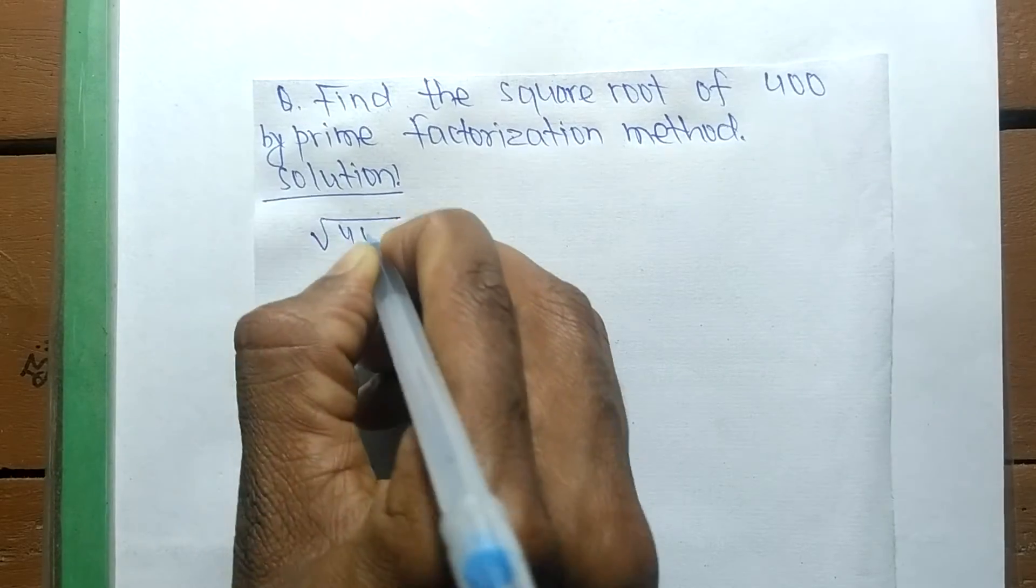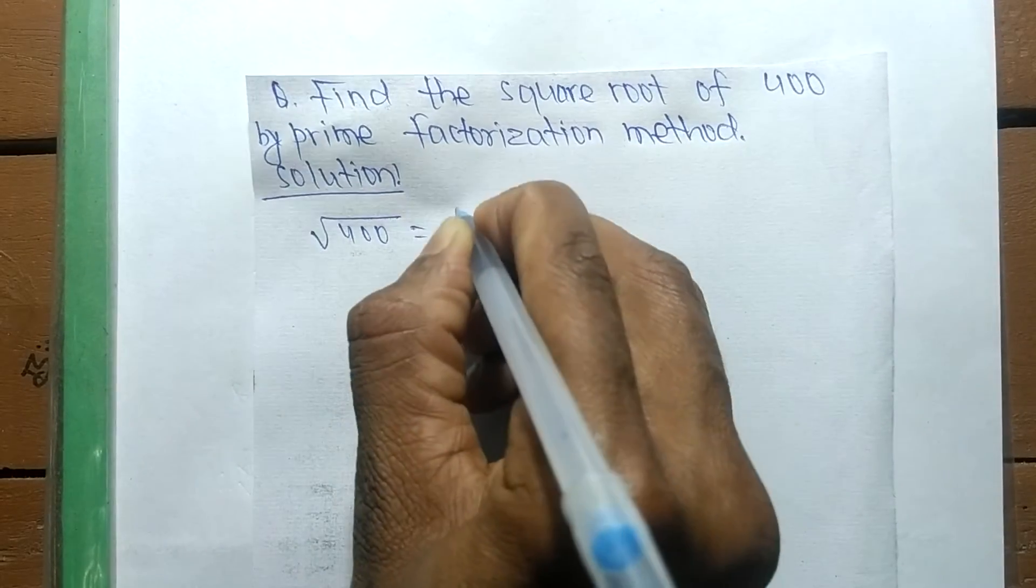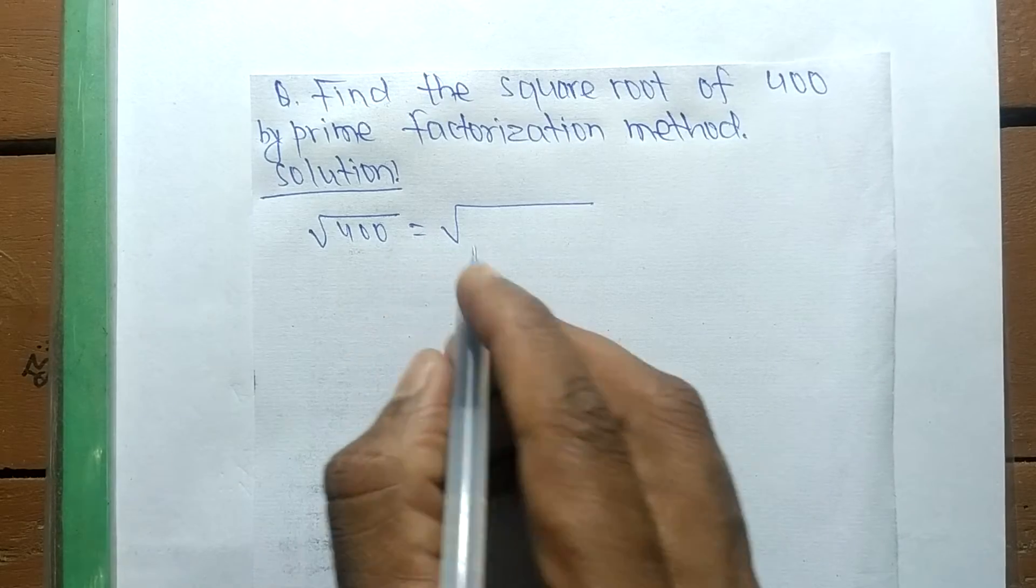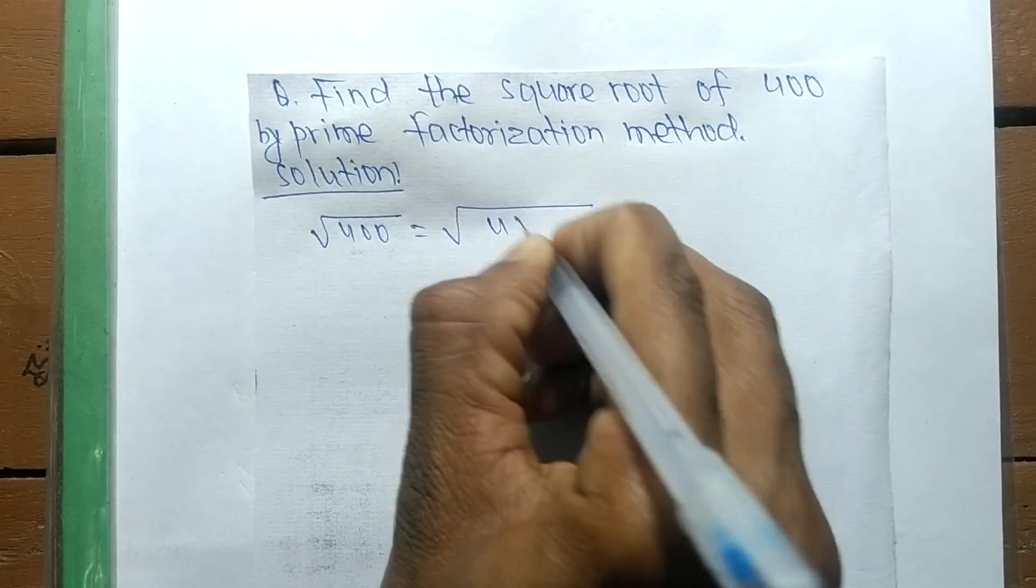The square root of 400 is equal to... so now we separate the numbers part and the zero part. We can write it as 4 into 100.